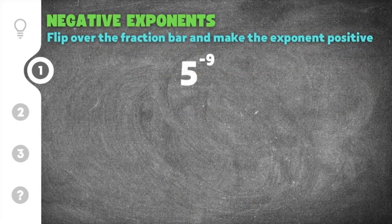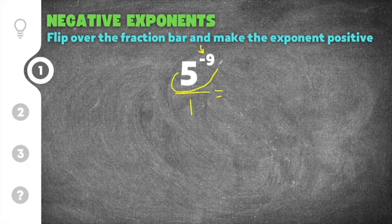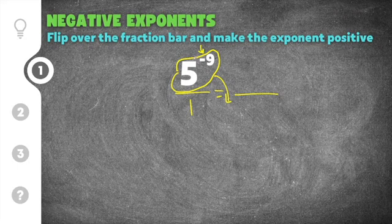Let's jump down to our first practice problem for negative exponents. This one gives us five to the negative ninth power. Remember this exponential term is written over a one. To simplify this we have to make this negative exponent into a positive exponent. We're going to take the exponential term of five to the negative ninth and move it into the denominator by keeping the base the same and changing the exponent to a positive. In the denominator we keep the base of five and this negative nine turns into a positive nine.